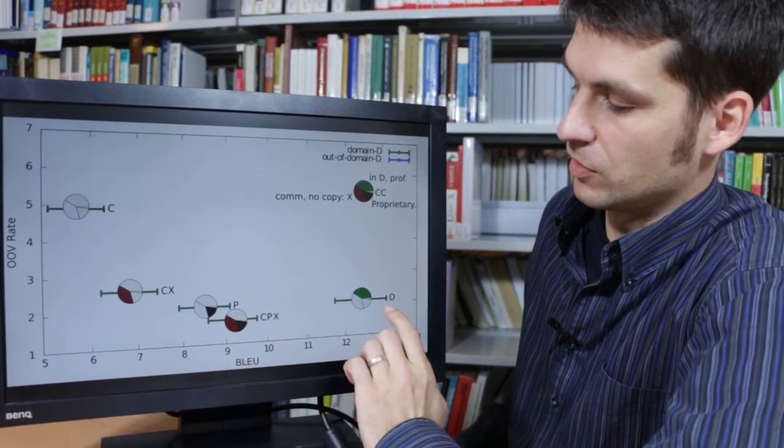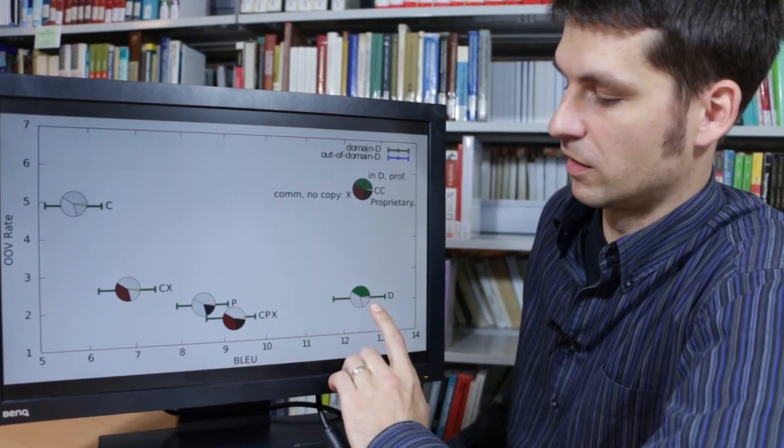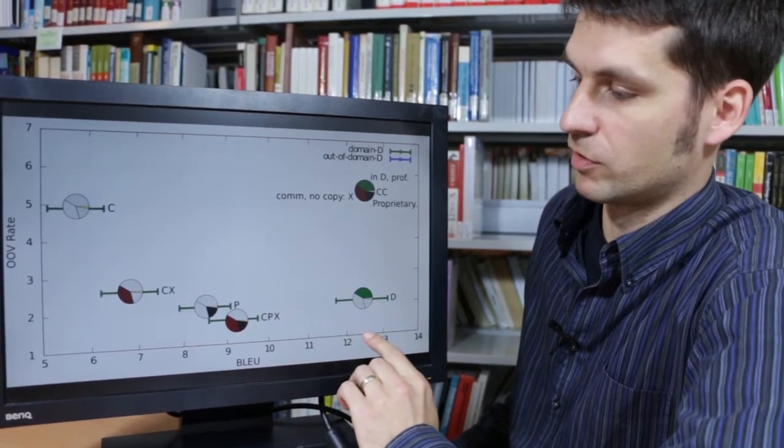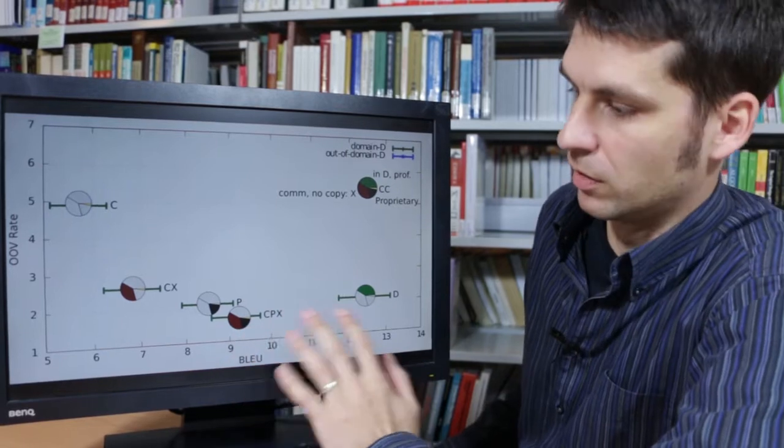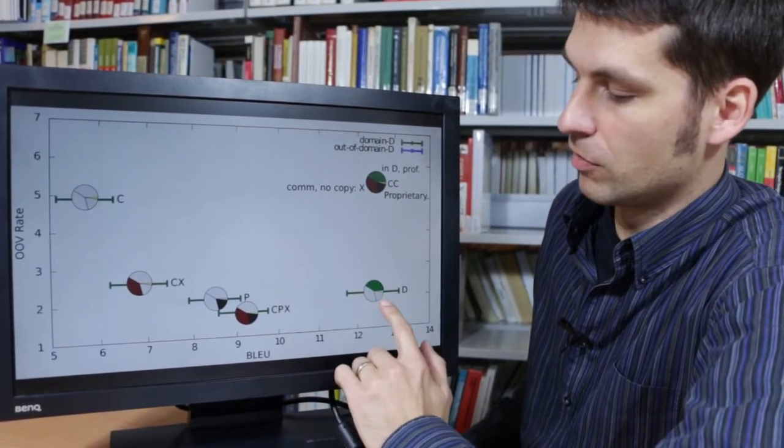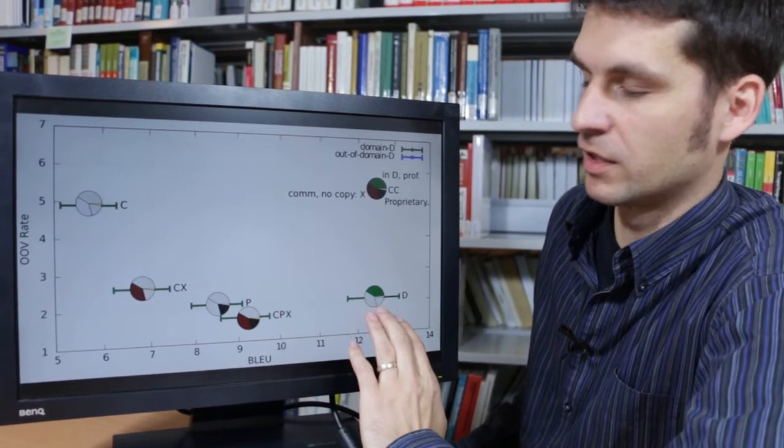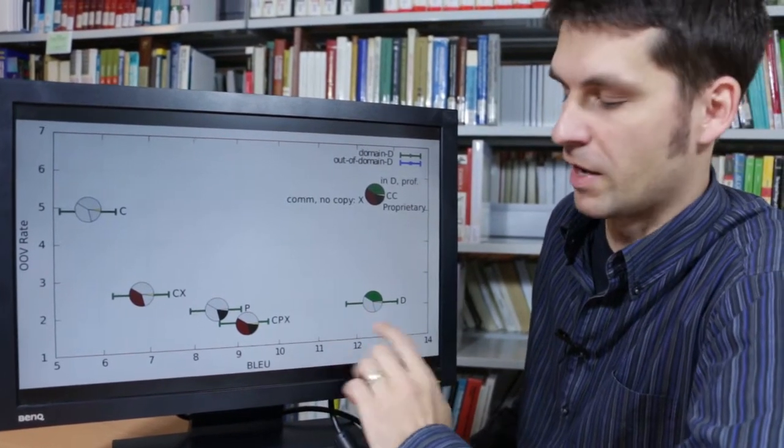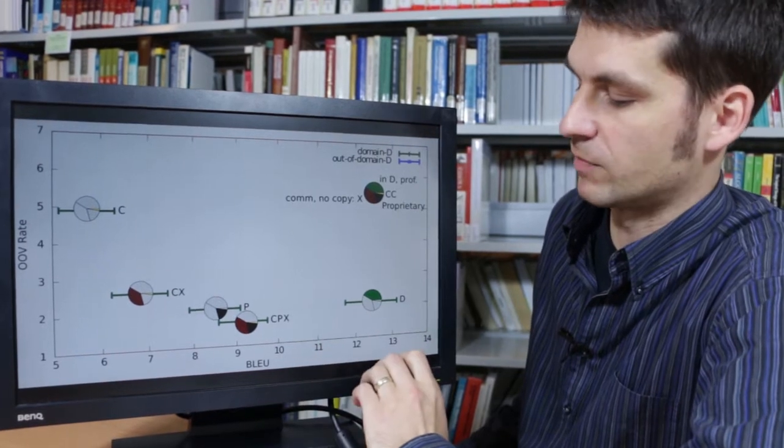In contrast to that, using just the in-domain training data gives us much better BLEU scores right away and somewhat higher out-of-vocabulary rate. So some words get unknown, but in general the sequences of words that the system produces are nicer and better fit for what the test set expects.